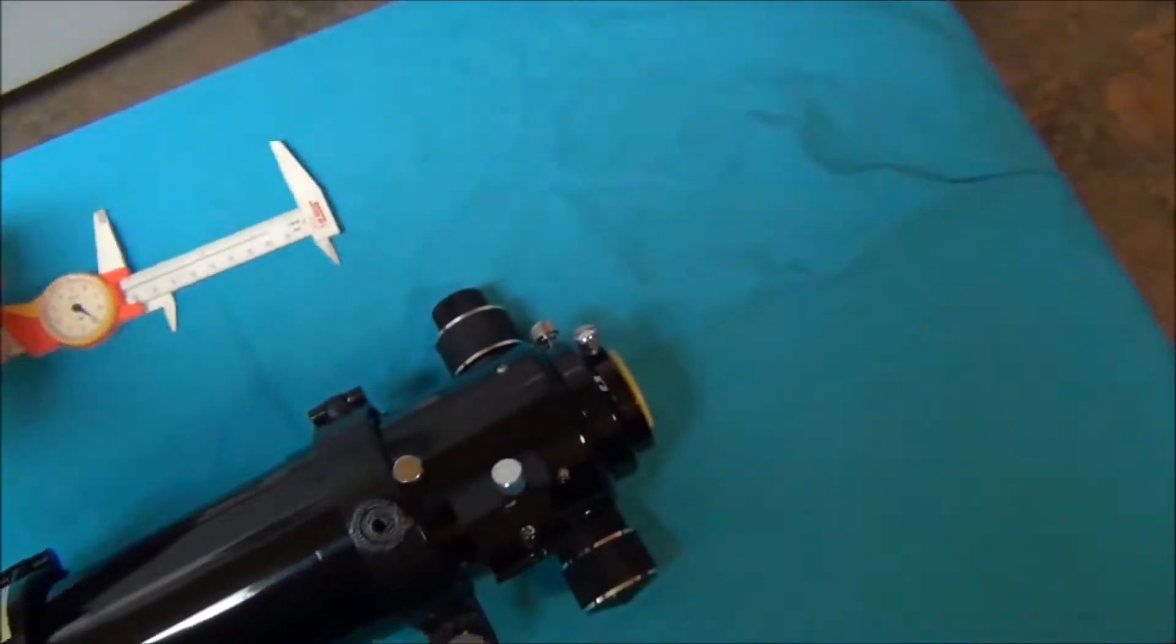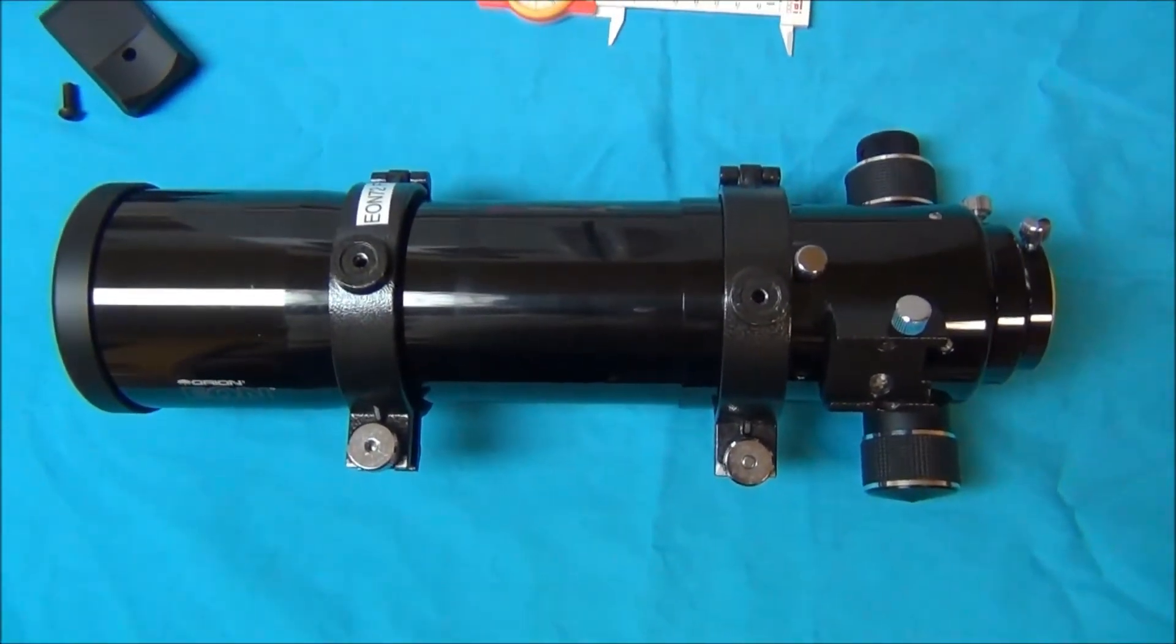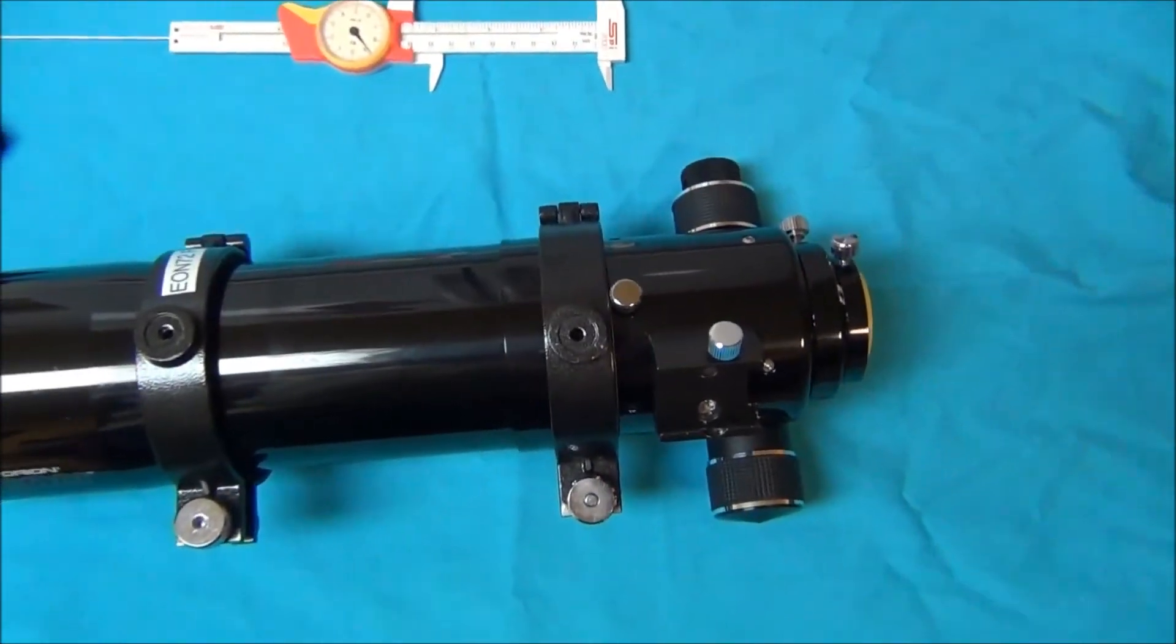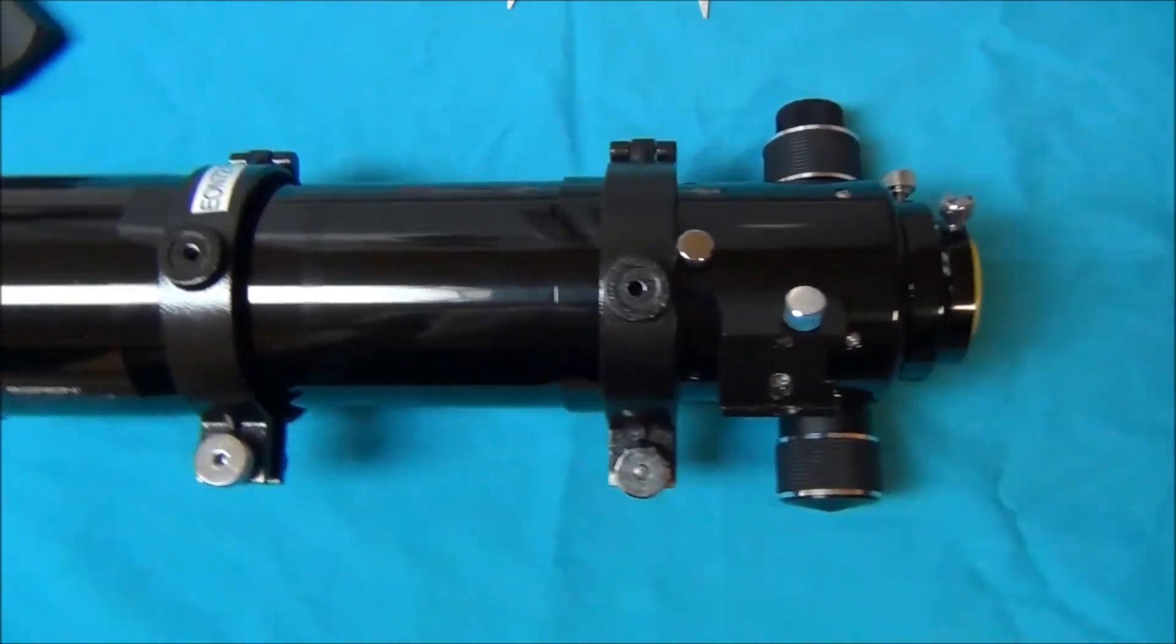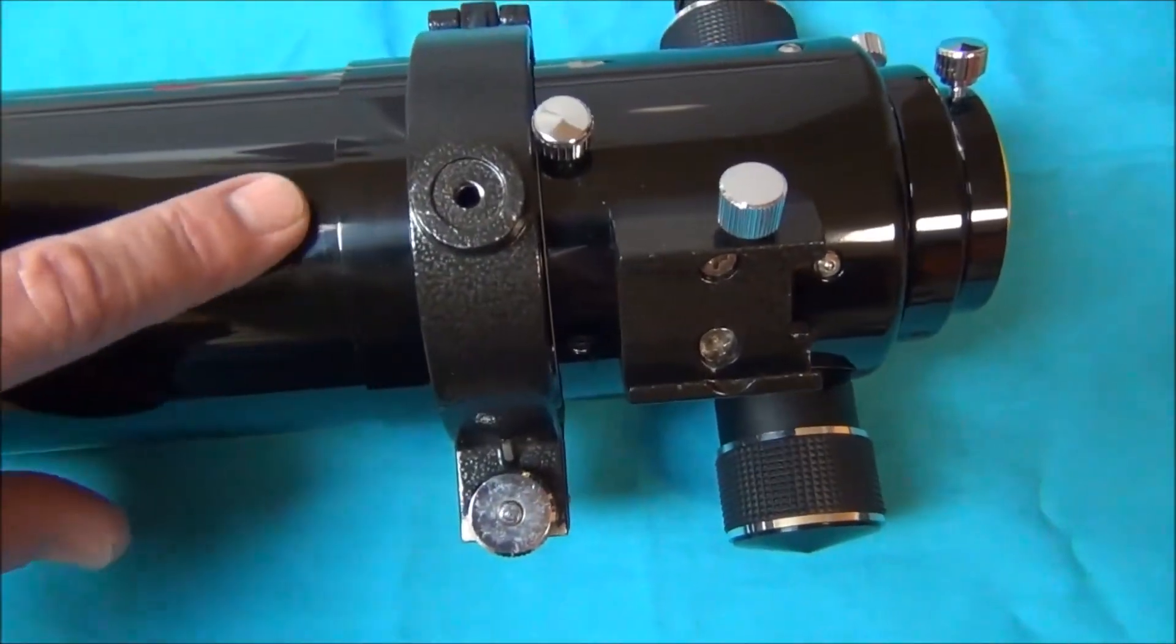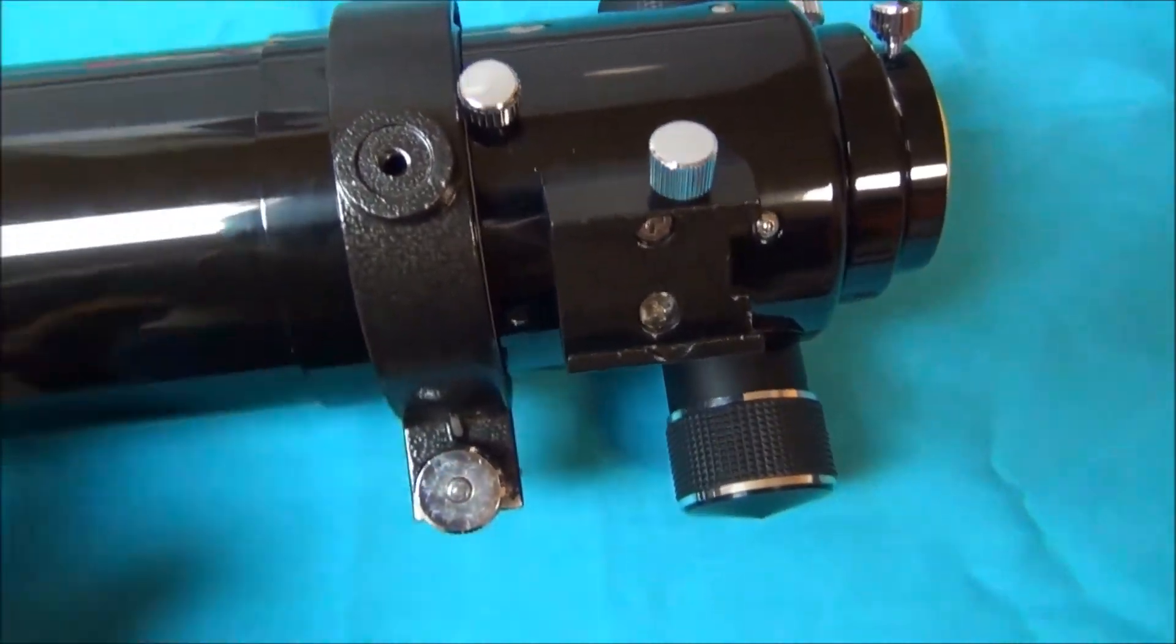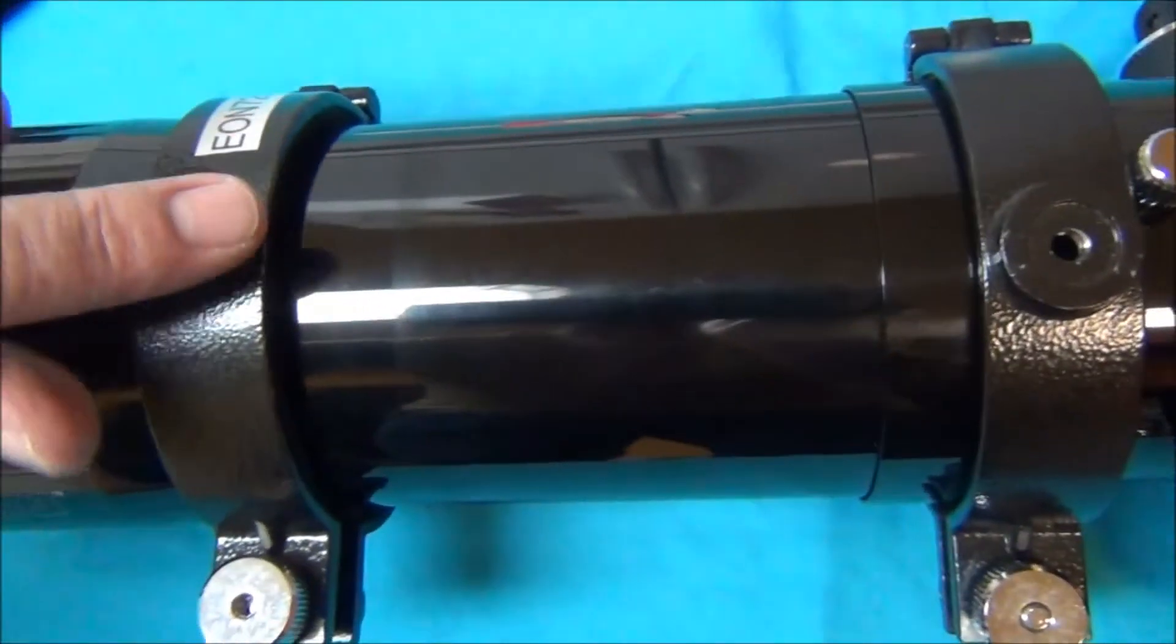So you need some 90 millimeter scope rings. The one thing that you'll see on the 72 millimeter telescope is that it has like an edge that's wider at 90 millimeters and a smaller diameter over here.